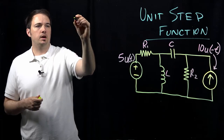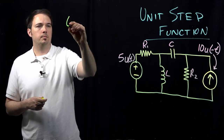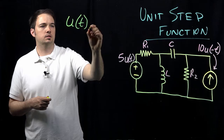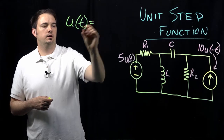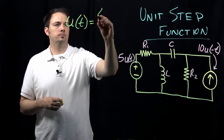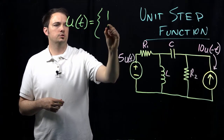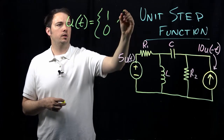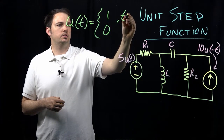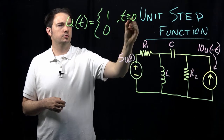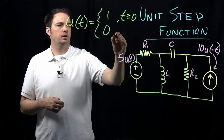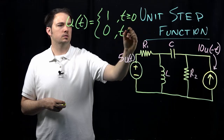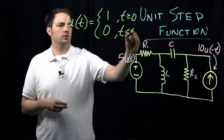What we want to keep in mind right off the bat is that the unit step function is a function that has a value of either 1 or 0. It's going to have a value of 1 for any time t greater than or equal to 0, and it's going to have a value of 0 for any time t less than 0.